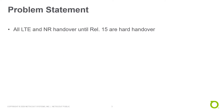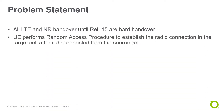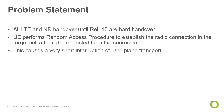Let's first have a look at the problem that is going to be resolved. As we know, all LTE and New Radio handovers until Release 15 are hard handovers. This means the UE performs a random access procedure to establish the radio connection in a target cell after it already disconnected from the source cell. Due to this, we have a very short interruption of the user plane transport. A typical mobility interruption time is between 30 and 60 milliseconds.